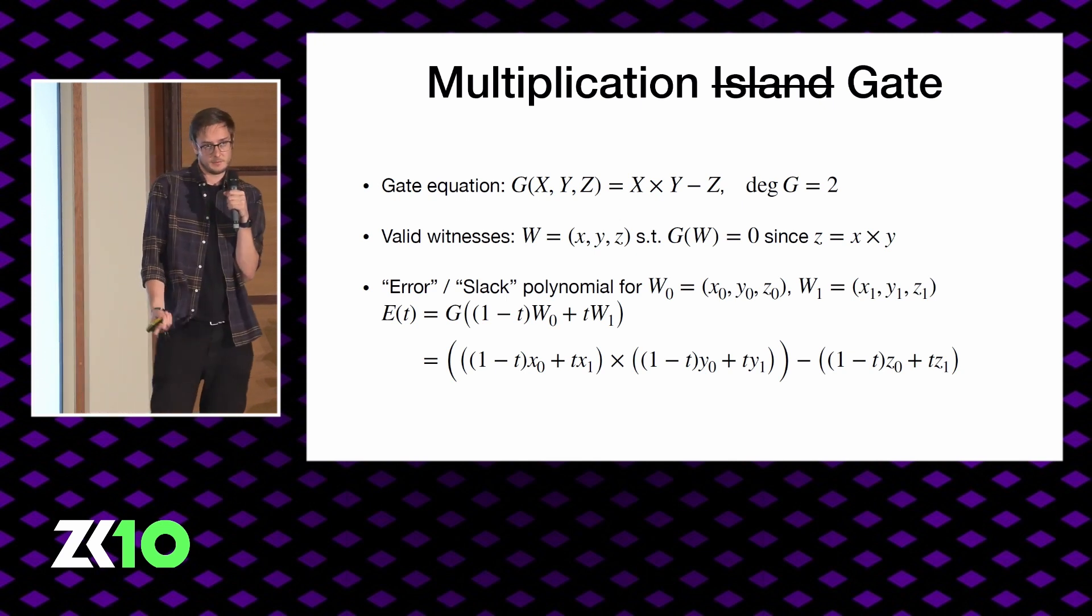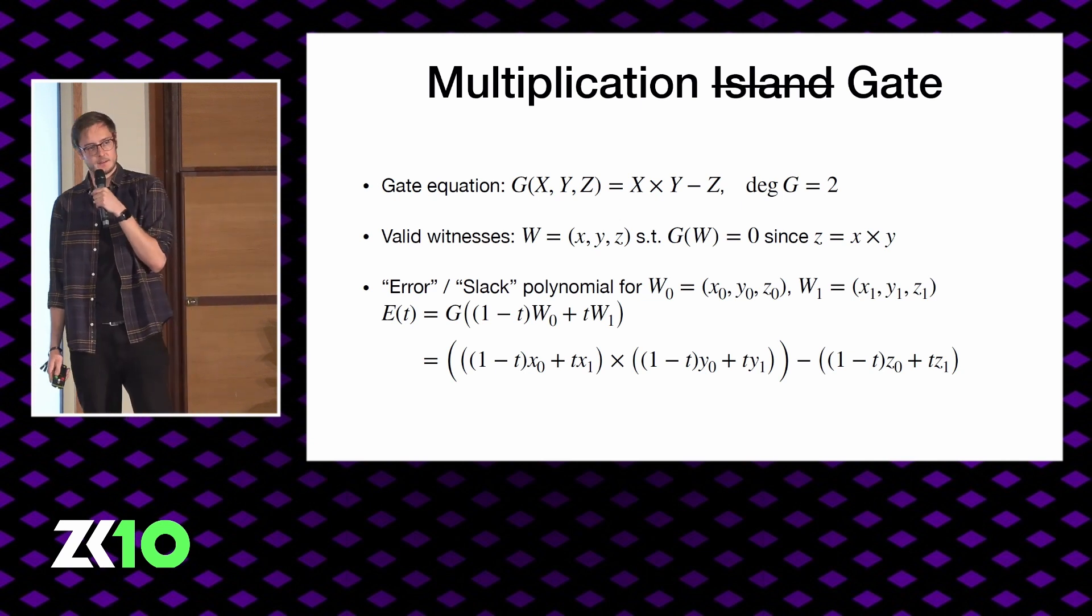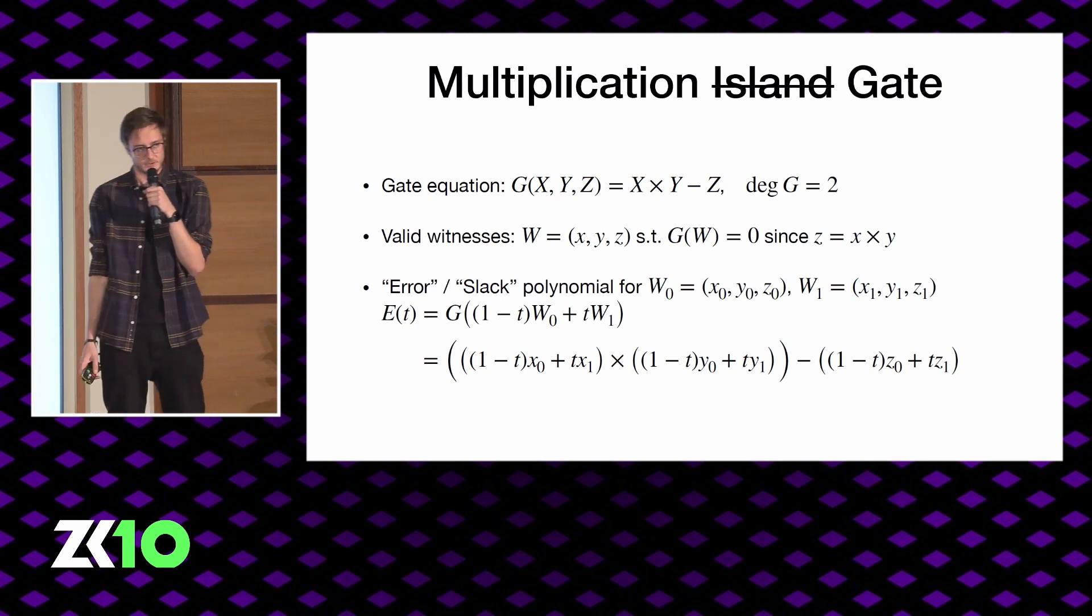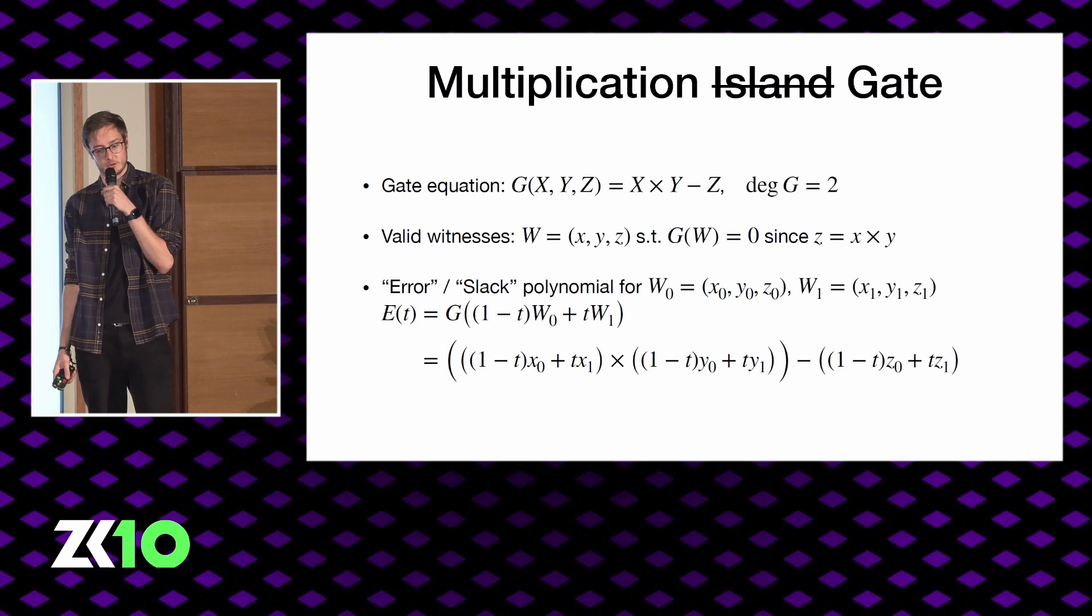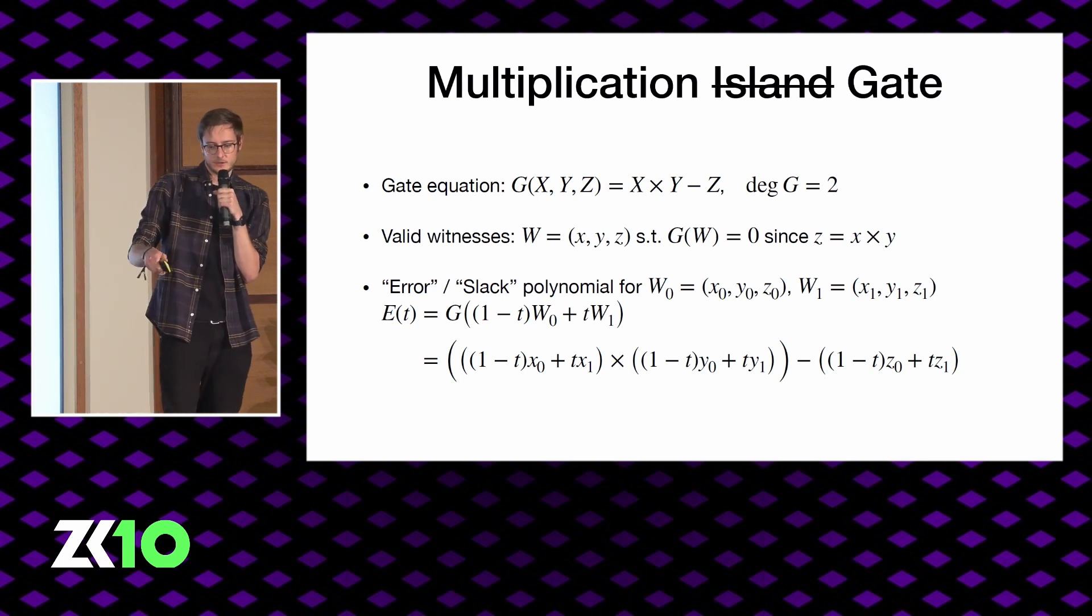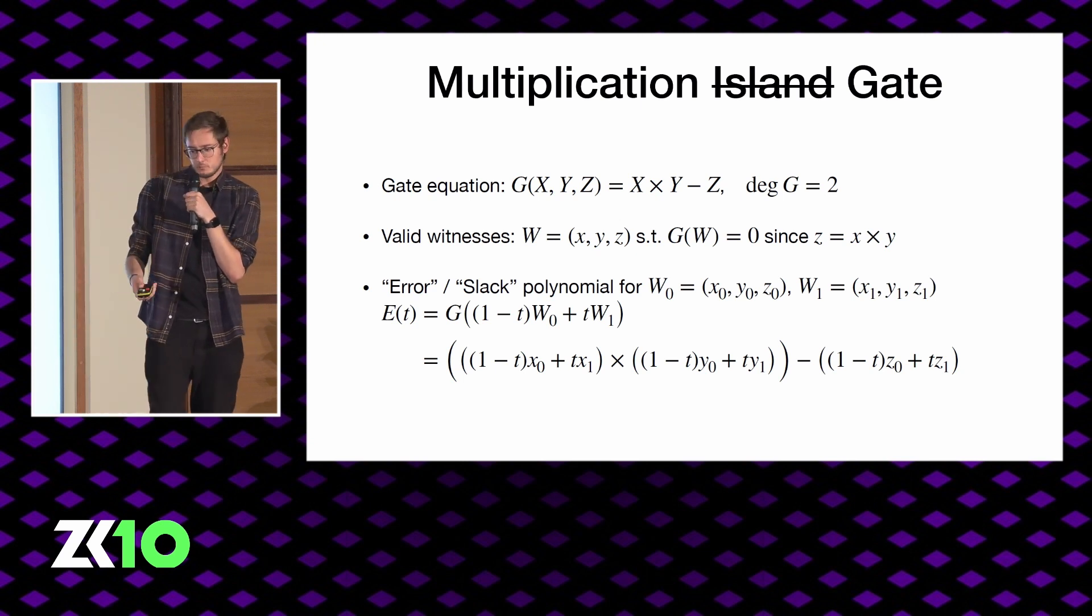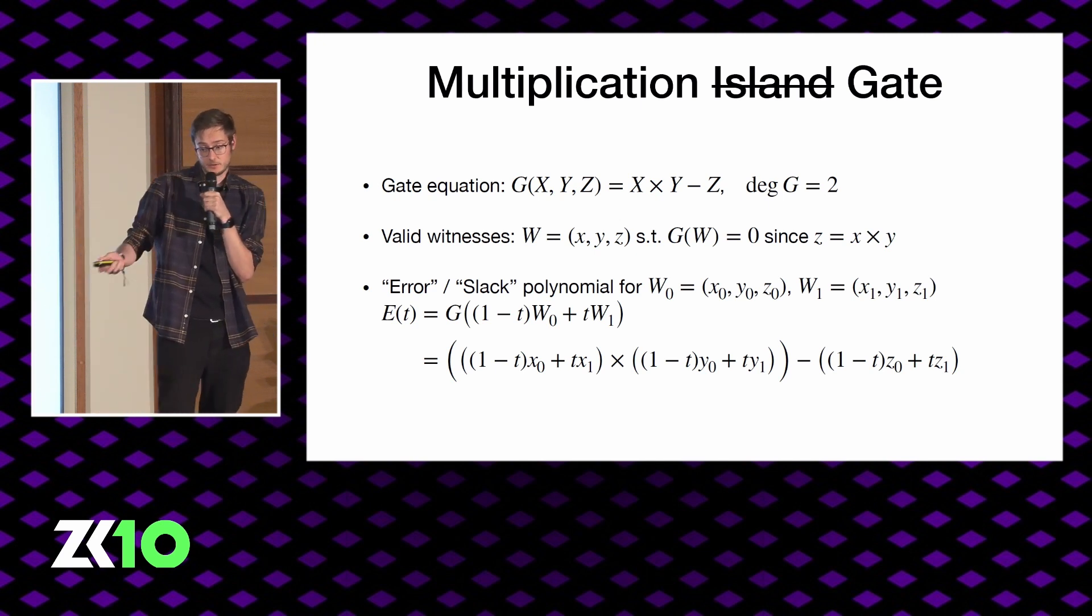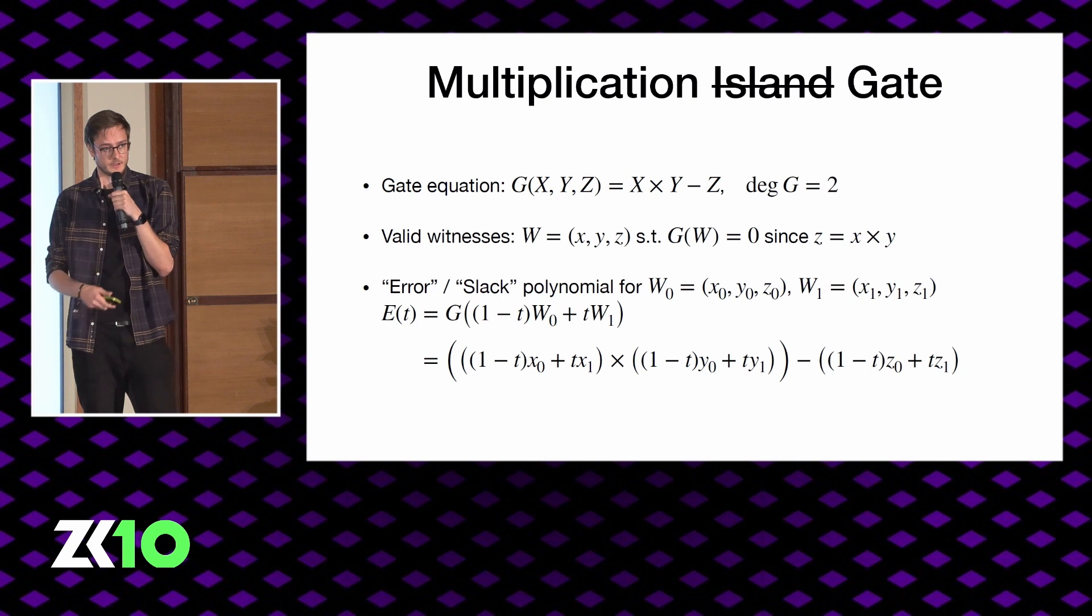And so just to bring things back, a gate is defined by X, Y, and Z such that Z is equal to X times Y. And the error polynomial here is just equal to the composition of the thing I detailed before. So you take the linear interpolation between the two witness points, W0 and W1, and plug that into your gate equation. This gives a complicated polynomial, but it's still easy to evaluate. And you only need to evaluate it in three points to get the full polynomial.